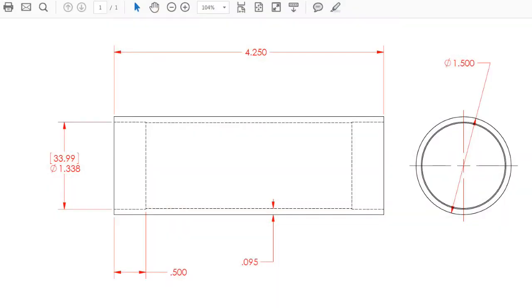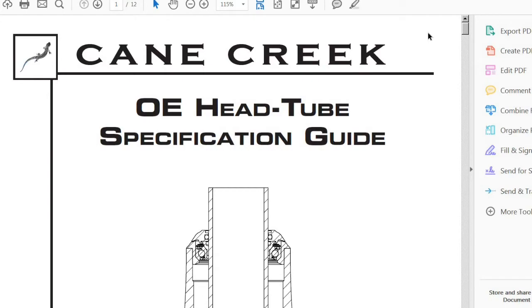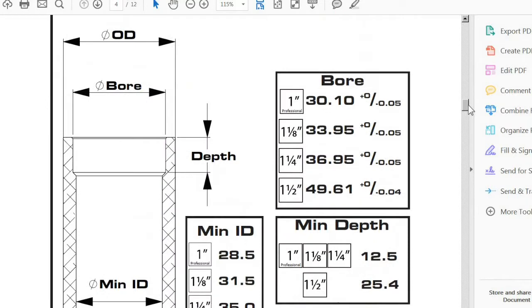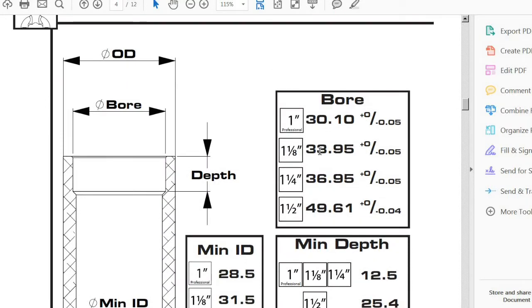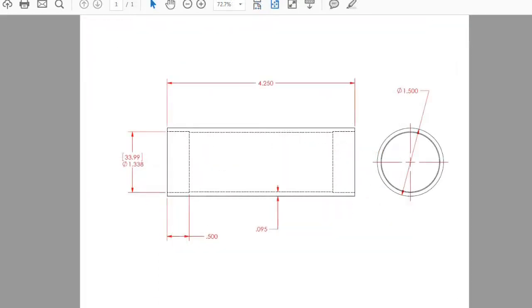The head tube I'll make from inch and a half by 095 wall chromoly, and all that really needs to be done is machine the bore for the headset cups. If we look at Cane Creek's head tube spec guide, they say 33.95 millimeters or 1.337 inches for inch and an eighth standard head tube.